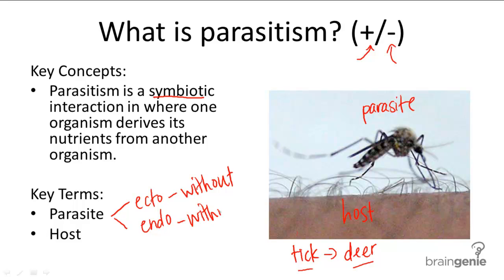Endo means within, so an endoparasite lives inside an organism. An example of that would be the tapeworm. No pictures are included because they're pretty disturbing, but tapeworms can be ingested by animals through the food they eat, and then the tapeworm will live inside the animal and feed on all the other food the host eats.